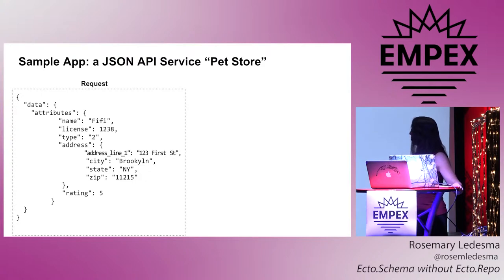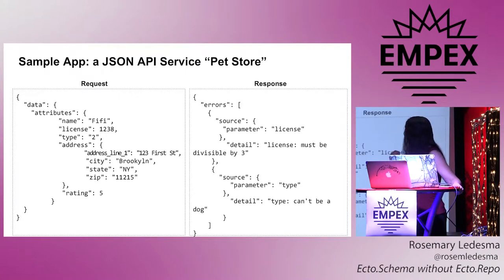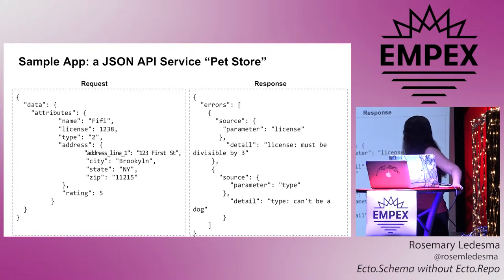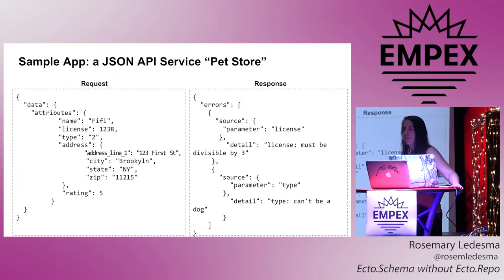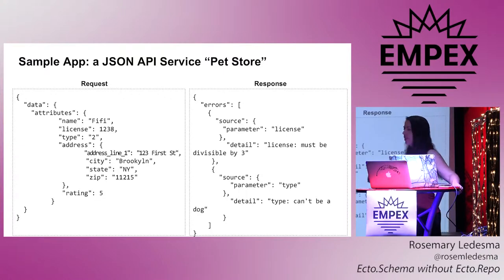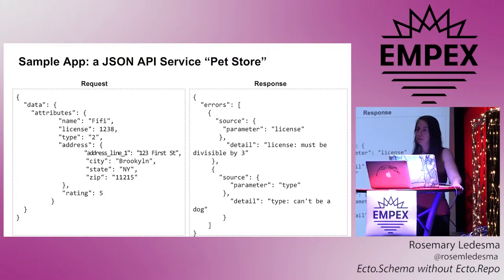I'm demonstrating how you can use Ecto schema to help you with some of the things you need to do to be a JSON API standard service. So that's a sample request that you might hit the app with — you're trying to create a pet and there's some data that you're providing. I'm going to use Ecto schema to provide an error response that helps you realize you've got some problems if you're missing something, there's an error in your data, it's the wrong type, or it doesn't meet some condition. That would be a pain to implement by hand, but I'm going to show you how to get it pretty much for free.